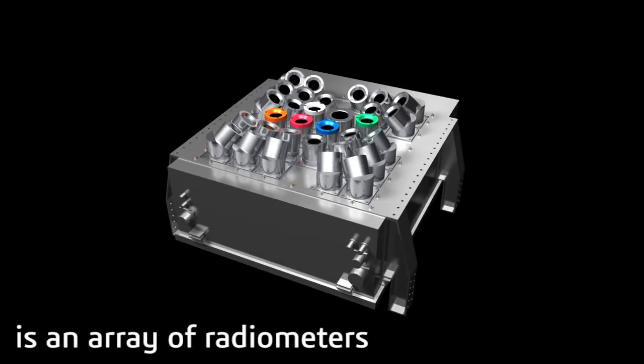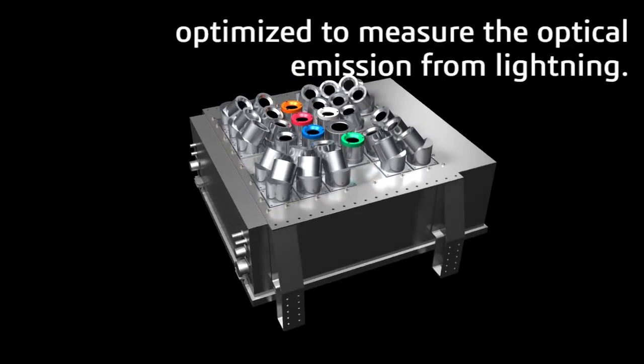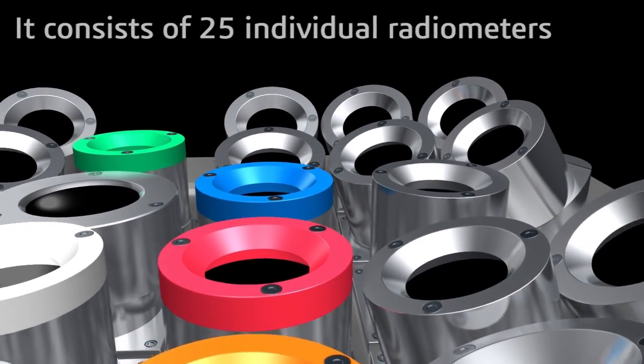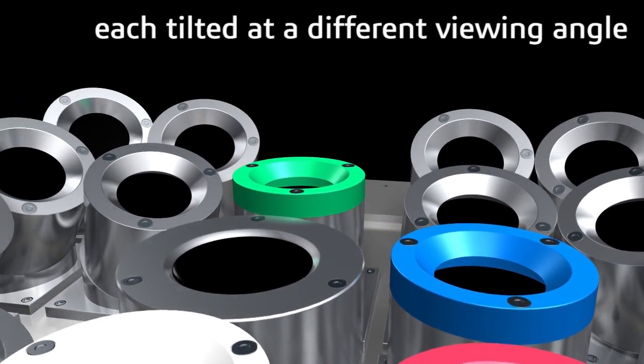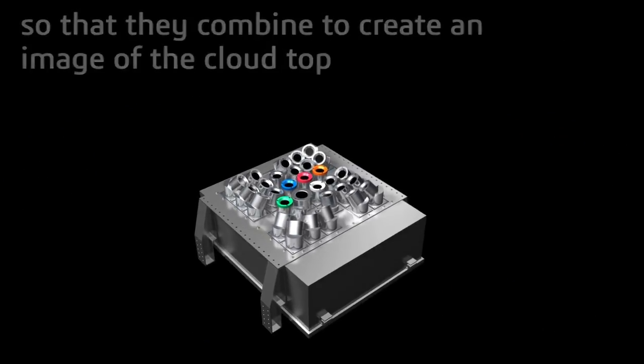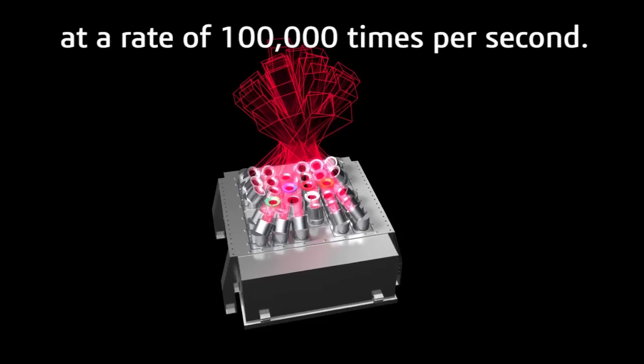It consists of 25 individual radiometers, each tilted at a different viewing angle so that they combine to create an image of the cloud top at a rate of 100,000 times per second.